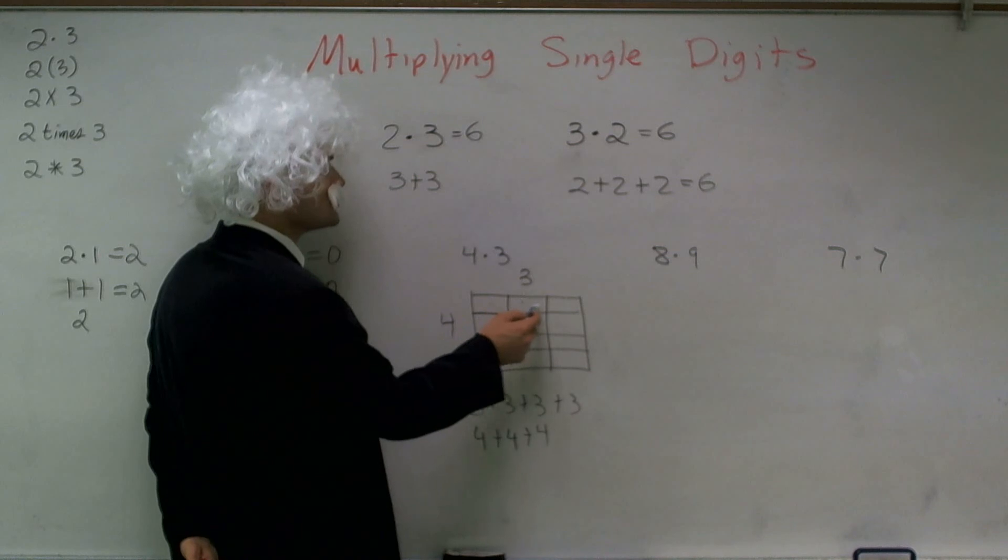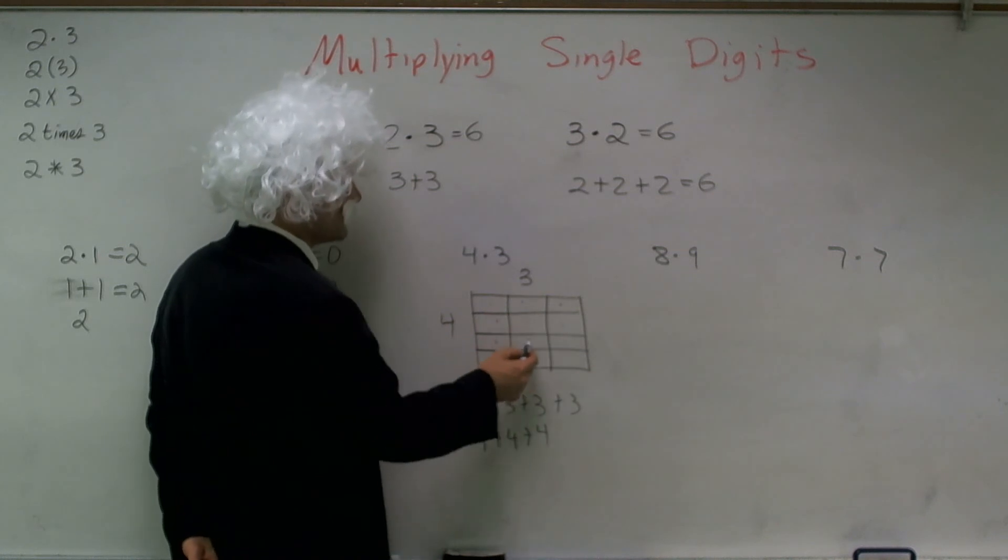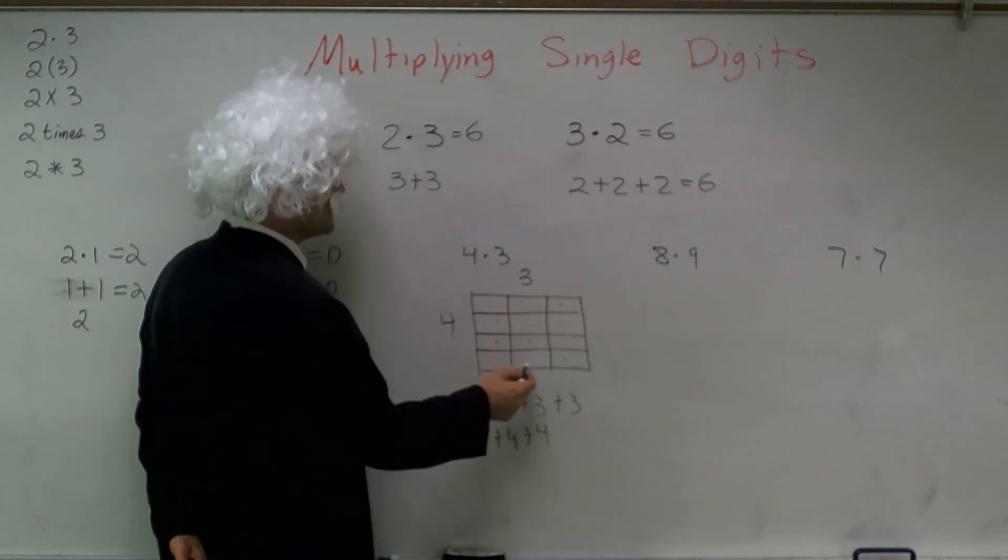Now, if you get kind of sick of writing this out and you still want a way to visually represent multiplication, you can represent a rectangle and say, well, 4 would be on one side, so you break it up evenly into 4. And then you can break the top up to 3. And therefore, I can count them all up and say 1, 2, 3, 4, 5, 6, 7, 8, 9, 10, 11, 12.